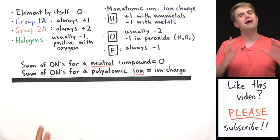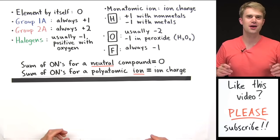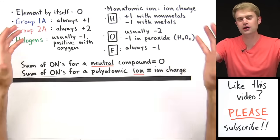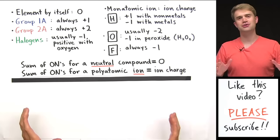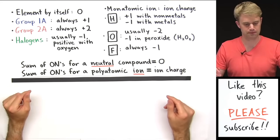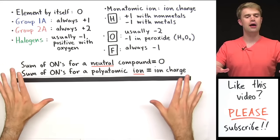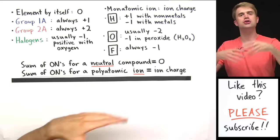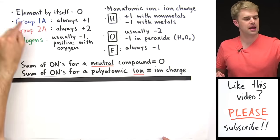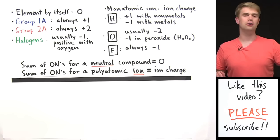Every teacher and textbook has their own version of these rules, but they all work in pretty much the same way. So if you learn mine, you'll still get the answer right 100% of the time, even if these are a little bit different from your teacher's. The first rule is this: an element by itself always has an oxidation number of zero.